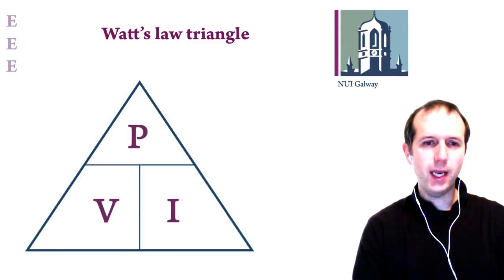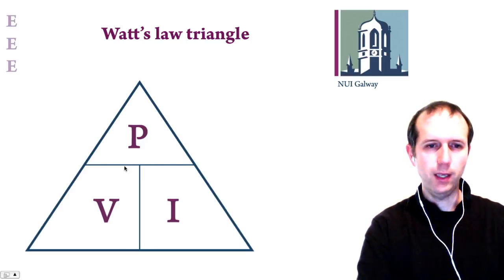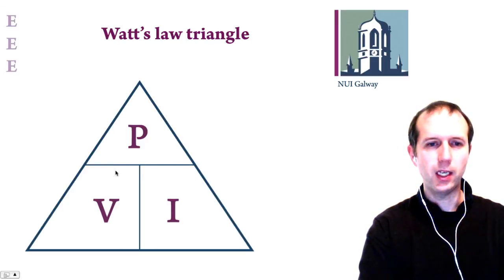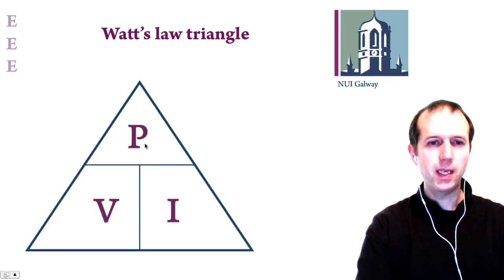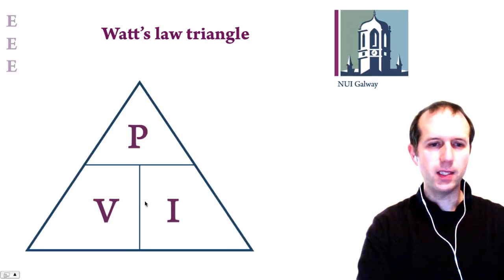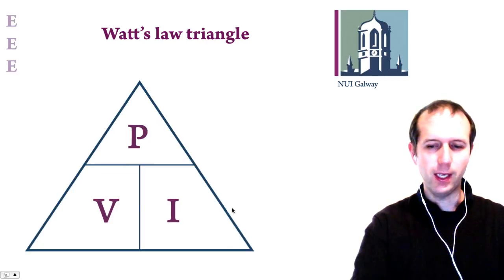Similarly to the Ohm's law triangle, we can create a Watt's law triangle. With a horizontal line as a divider and a vertical line as a multiplier: P equals V multiplied by I; P divided by V equals I; and P divided by I equals V. This triangle is a useful way to remember Watt's law: P = VI.